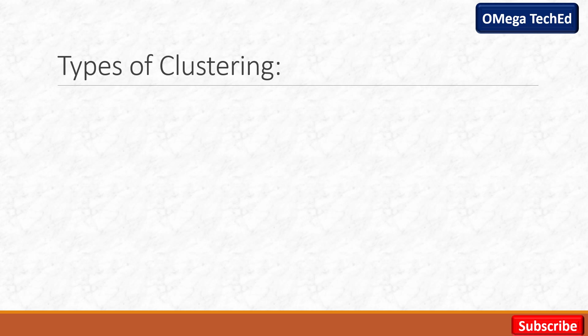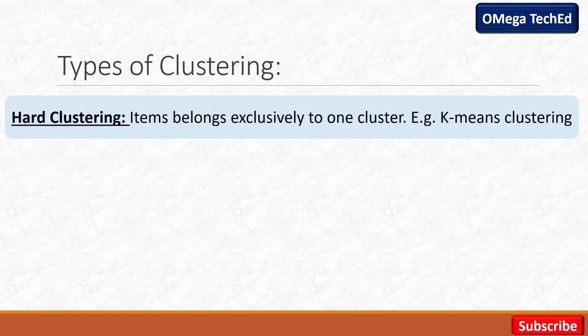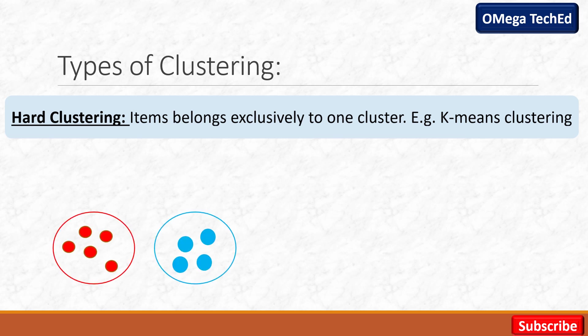We can classify clustering into two categories. First is hard clustering, where items belong exclusively to one cluster. For example, K-means clustering. Hard clustering میں جو ہمارے پاس cluster ہوتے ہیں اس کے items exclusively ایک ہی cluster کو belong کرتے ہیں۔ جیسے diagram میں دو cluster دیئے ہوئے ہیں — red color کے data items exclusively first cluster کو اور blue data points exclusively second cluster کو belong کریں گے۔